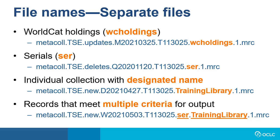You can customize your library's MARC records settings and individual collection settings to receive separate files for some types of collections. If you choose to have records for WorldCat Holdings delivered in a separate file, the file name will include WC Holdings after the timestamp. If you choose to have all serials records delivered in a separate file, the file name will include SER after the timestamp. If you have designated all records in a collection to be in one file, the file name will include the specified name, in this case Training Library. If your records meet multiple criteria for output, such as serials records in a separate file with a specified name, then you will see multiple demarcations, in this case SER followed by Training Library.